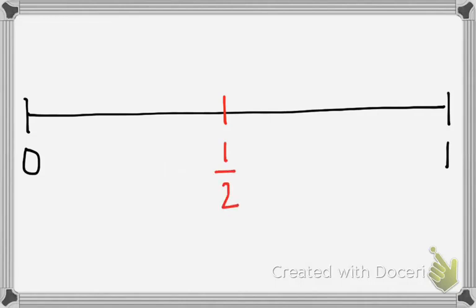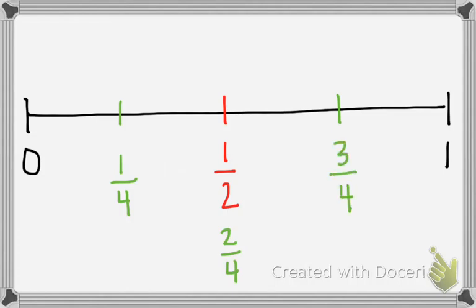We've got 1-half and 2-halves. We're also going to think about placing our fourths on the number line. I know that 1-fourth is going to be right here, and 1-half is the same as 2-fourths. And then here I have 3-fourths. The last thing we're going to do is place our thirds: 1-third goes here between 1-fourth and 1-half, and 2-thirds goes right here.